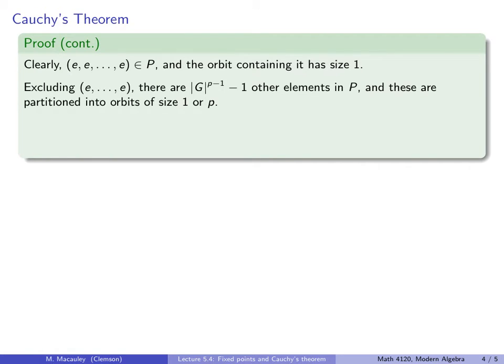However, if we exclude this p-tuple, then there are this many other elements in P. The |G|^(p-1) - 1 other elements in P. And these are partitioned into orbits of size 1 or size p.